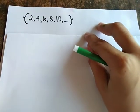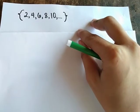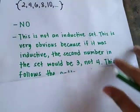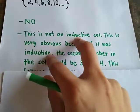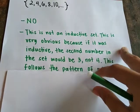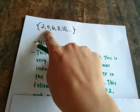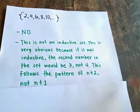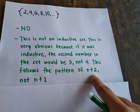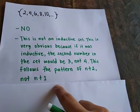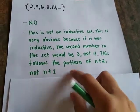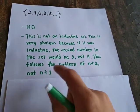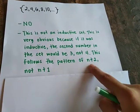Next, consider the set: 2, 4, 6, 8, 10, and so on. Is this an inductive set or not? No, this is not an inductive set. This is very obvious because if it were inductive, the second number in the set would be 3 and not 4. This follows the pattern of n plus 2 and not n plus 1. So it means this set does not pass the test of n plus 1, because the pattern of this set is n plus 2.